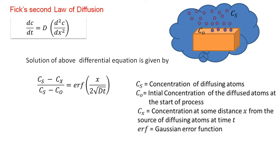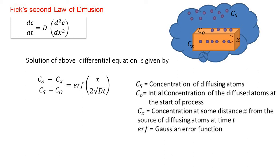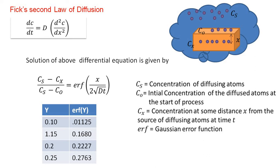Look at the diagram. The picture shows diffusion of carbon atoms into a component. The concentration of the carbon at the source is Cs, and the concentration at the component surface is C₀. When diffusion takes place, the carbon atoms move into the component. At a distance x, the concentration prevailing at that point is Cx. To understand the Gaussian error function relationship, we look into the table provided, where values of y and erf(y) are given. These are very helpful in solving numericals.